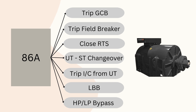When the trip command goes to the GCB, the generator is disconnected from the grid. Then the trip command goes to the field breaker to isolate the excitation system, but the turbine is still in action. The trip command also goes to the RTS to stop the steam flow and slow down the generator's rotor. The unit bus will be charged through the Station Transformer, and the incomer from the Unit Transformer will be tripped.